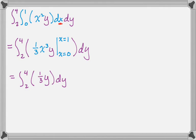Get a new integral that's only in terms of y. So I get 1 third y dy. And then I have to integrate that and plug in. So I get 1 sixth and then 16 minus 4. So I get 12 over 6, which is 2.